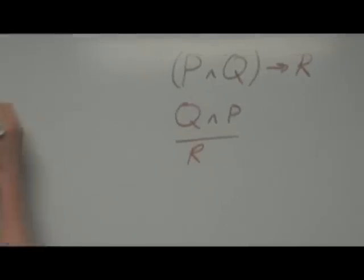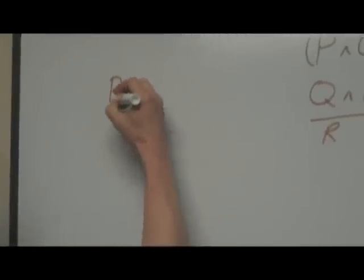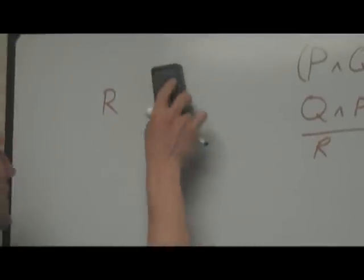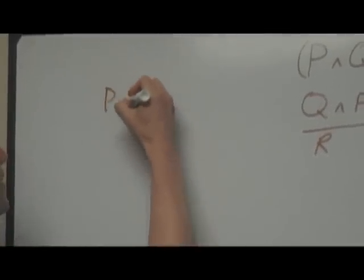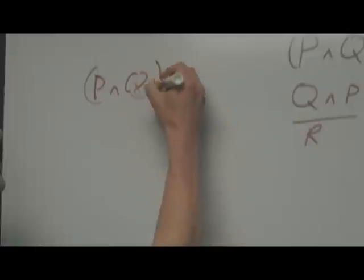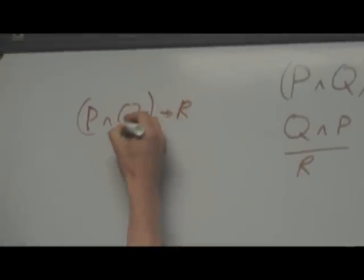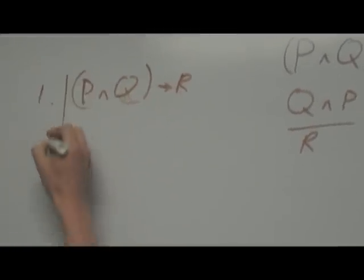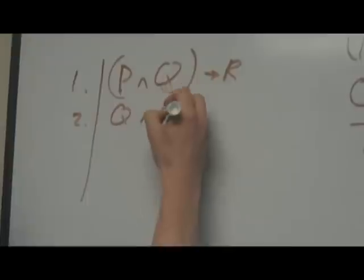Okay, so in a conventional proof, you would do the following. R, one, two, Q and P.